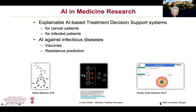What we are interested in in my research group is to build explainable AI-based treatment decision support systems, and this is something that we want to use to decide on better treatment for cancer patients.